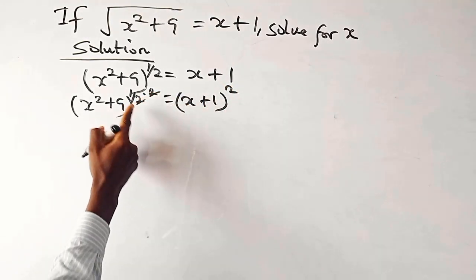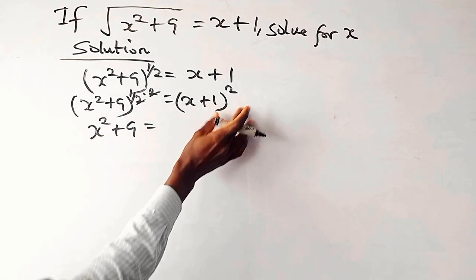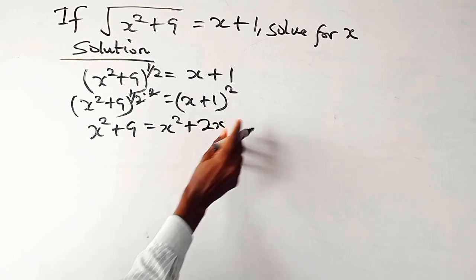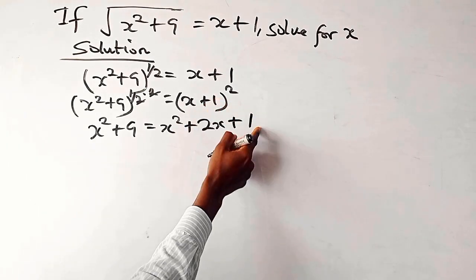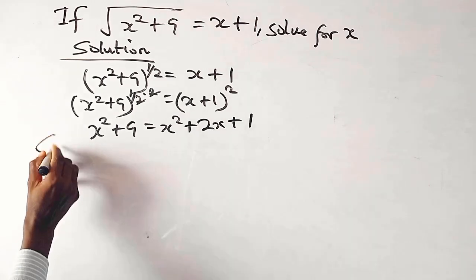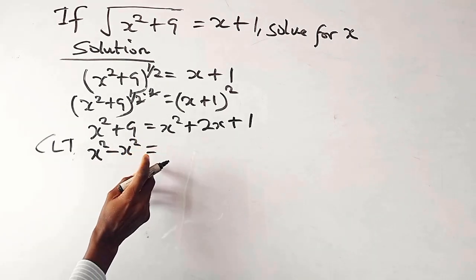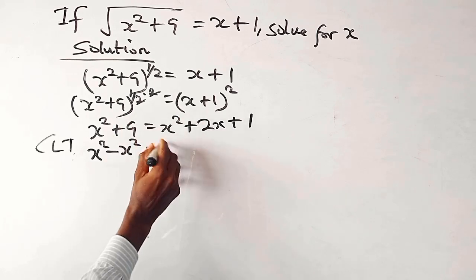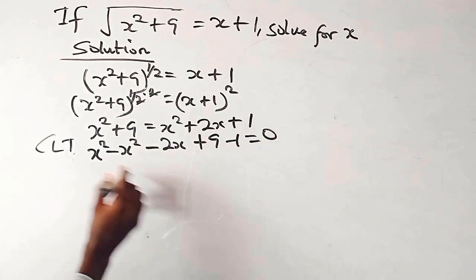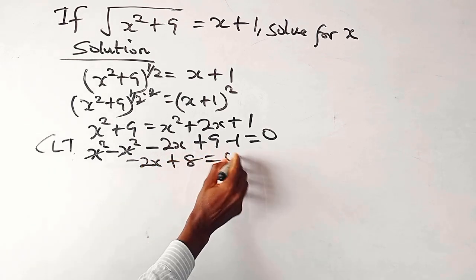The square and the half cancel, so we have x squared plus 9 equals x plus 1 squared. When you open up x plus 1 squared, you have x squared plus 2x plus 1. Now collecting like terms: x squared minus x squared gives 0, so we have minus 2x plus 9 minus 1 equals to 0, which gives minus 2x plus 8 equals to 0.